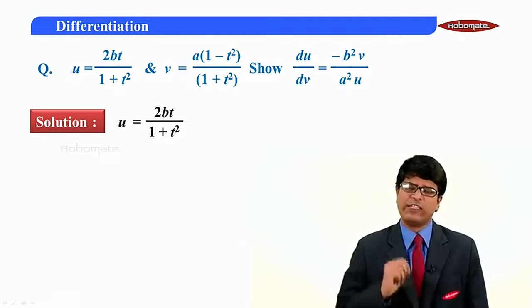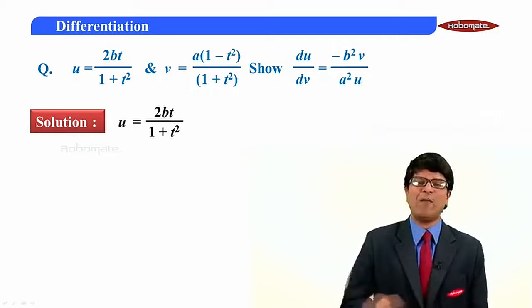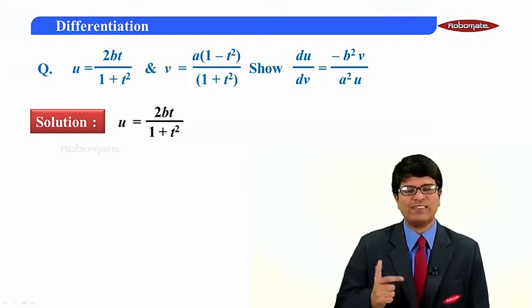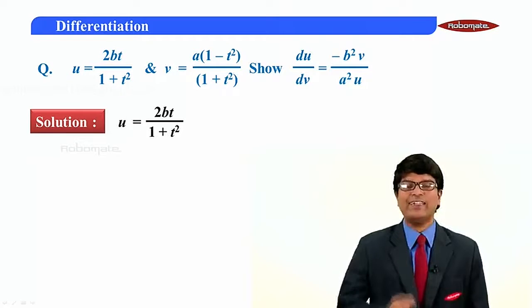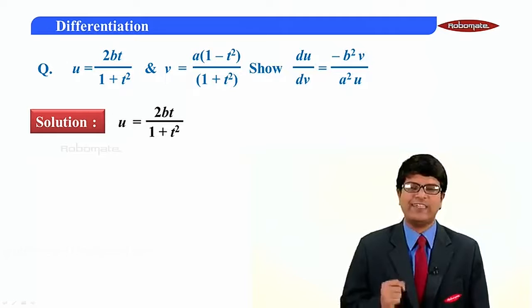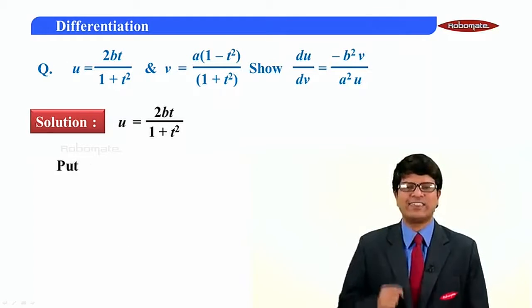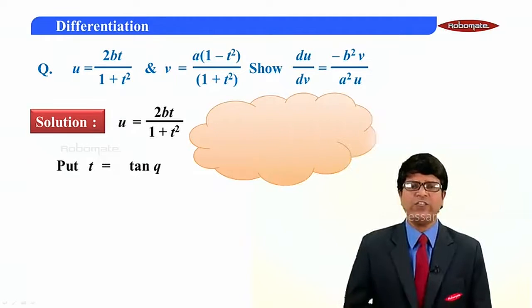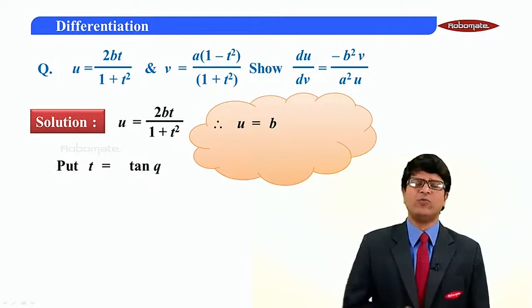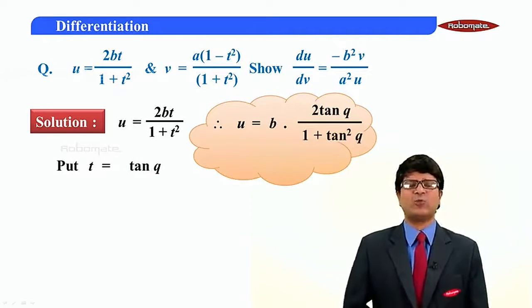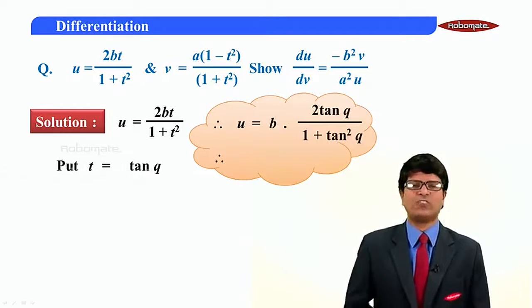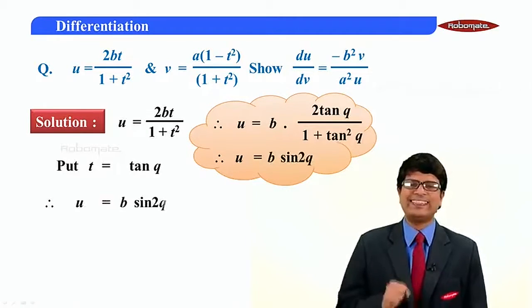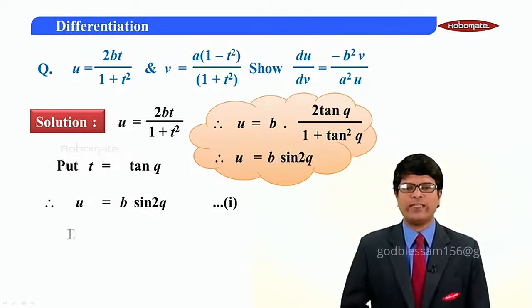b is a constant, so it can be taken outside. It is 2t upon 1 plus t square, which is nothing but the compound angle formula of 2 tan theta upon 1 plus tan square theta. And 2 tan theta upon 1 plus tan square theta is nothing but sine 2 theta. So let us substitute t as tan theta. If I substitute t as tan theta, u is equal to b times 2 tan theta upon 1 plus tan square theta, which is nothing but sine 2 theta. So u is equal to b sine 2 theta.